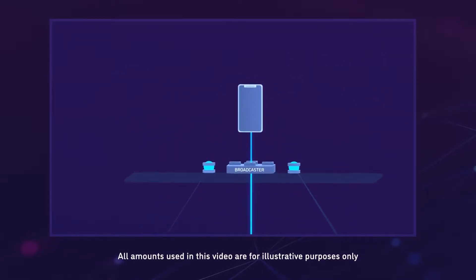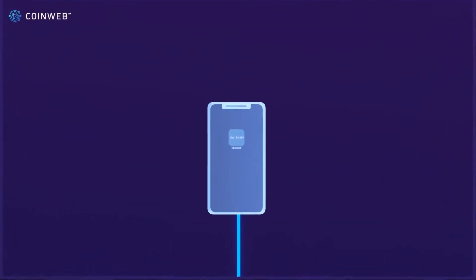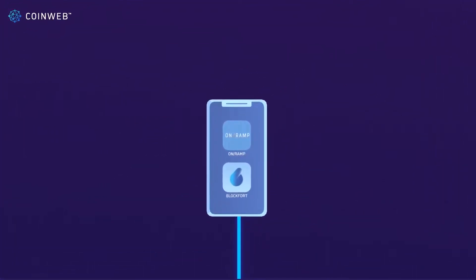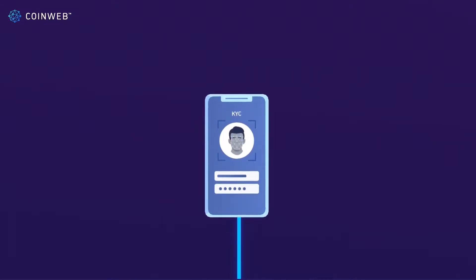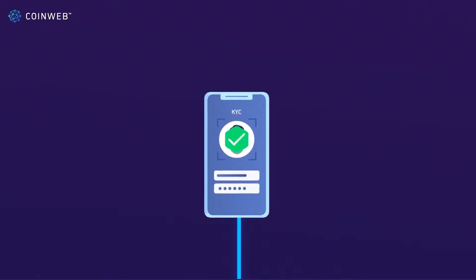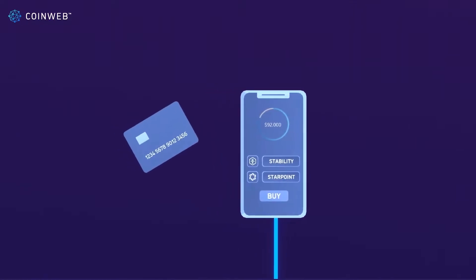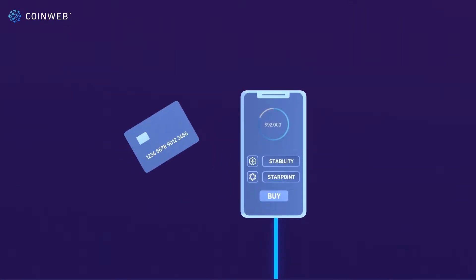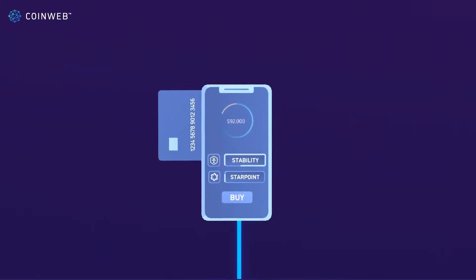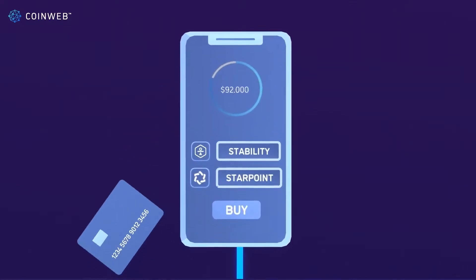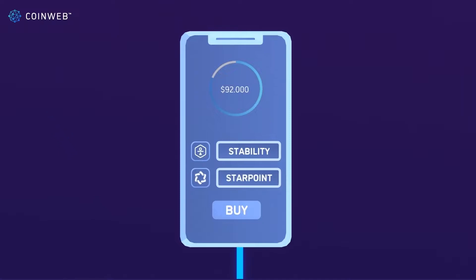To get started, a customer installs the OnRamp or Blockfort app and signs up by completing KYC. Once approved, they log into their mobile wallet where they can use various payment methods including credit cards to buy a Stability or a Star Point, which are the stable tokens available in these wallets.